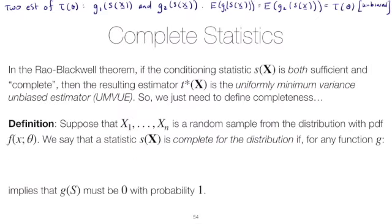It turns out that if we add a condition to s(x) — meaning it's not only sufficient but also complete, which we're about to define — then the resulting estimator from the Rao-Blackwell theorem, say t-star, is the best estimator. Best meaning the uniformly minimum variance unbiased estimator. So we just need to define and work with completeness in order to come up with this best estimator.